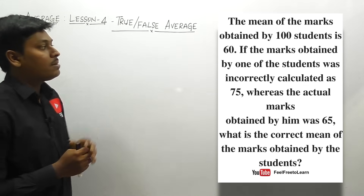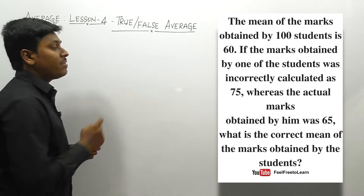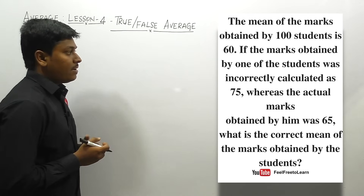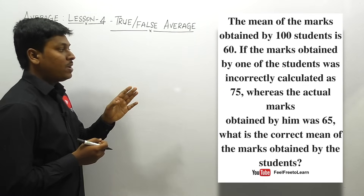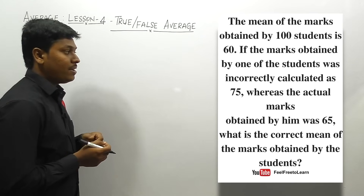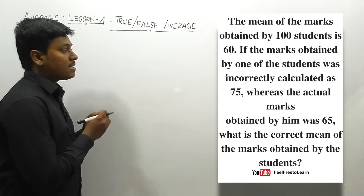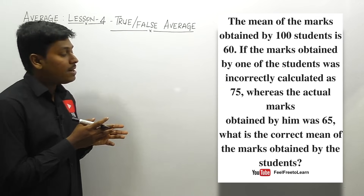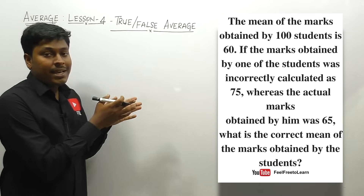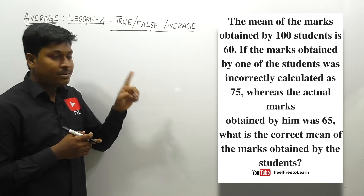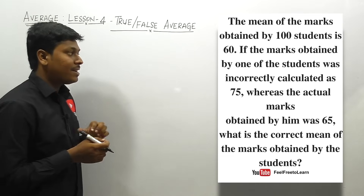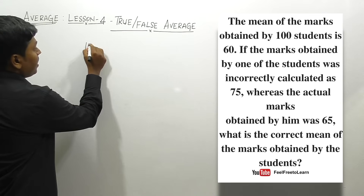Question number one: the mean of marks obtained by 100 students is 60. If the mark of one student was incorrectly calculated as 75 whereas the actual mark was 65, what is the correct mean? Mean and average are the same. The average of 100 students is 60, but it was wrongly calculated because the actual mark of one student is 65, not 75.